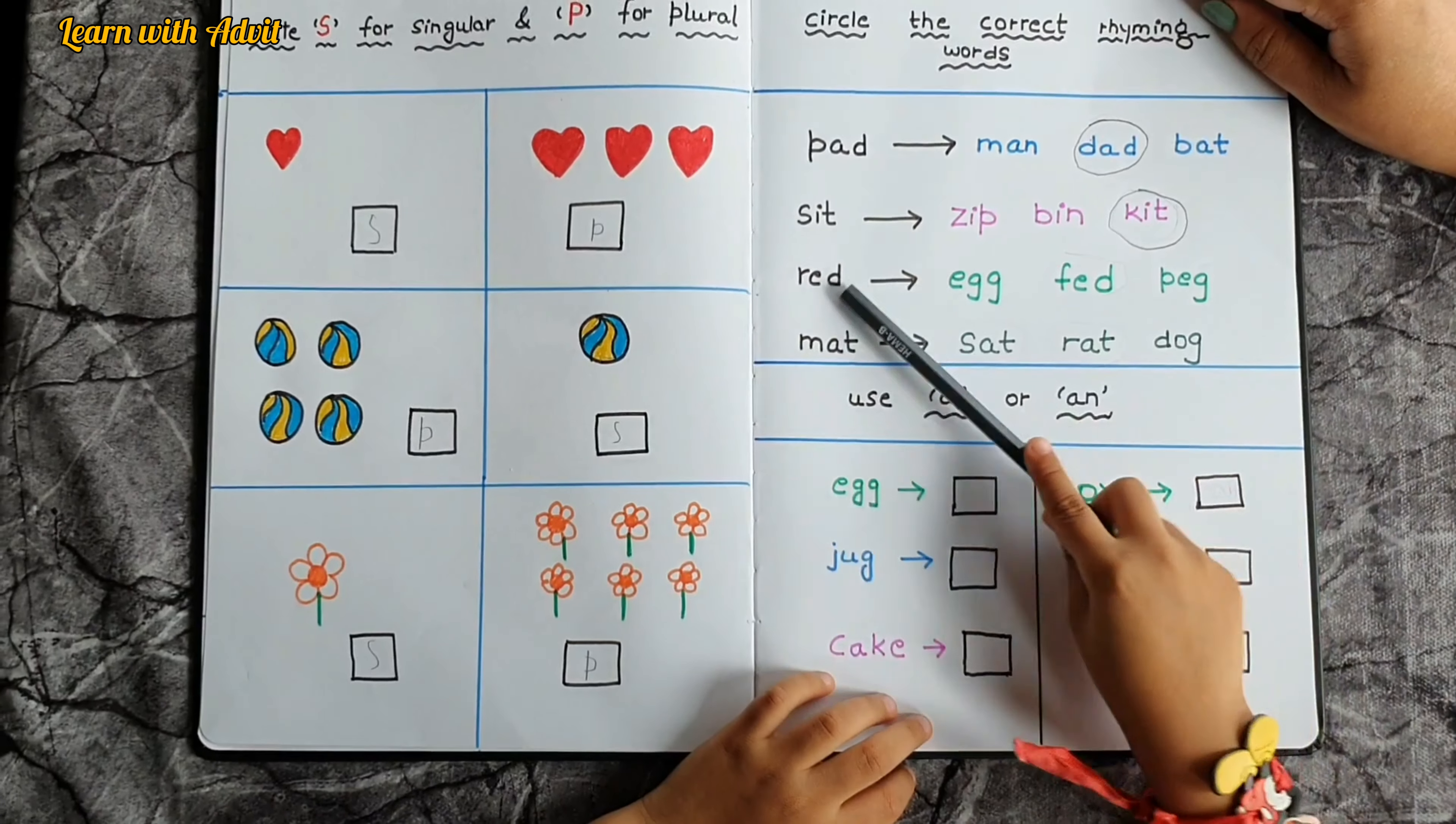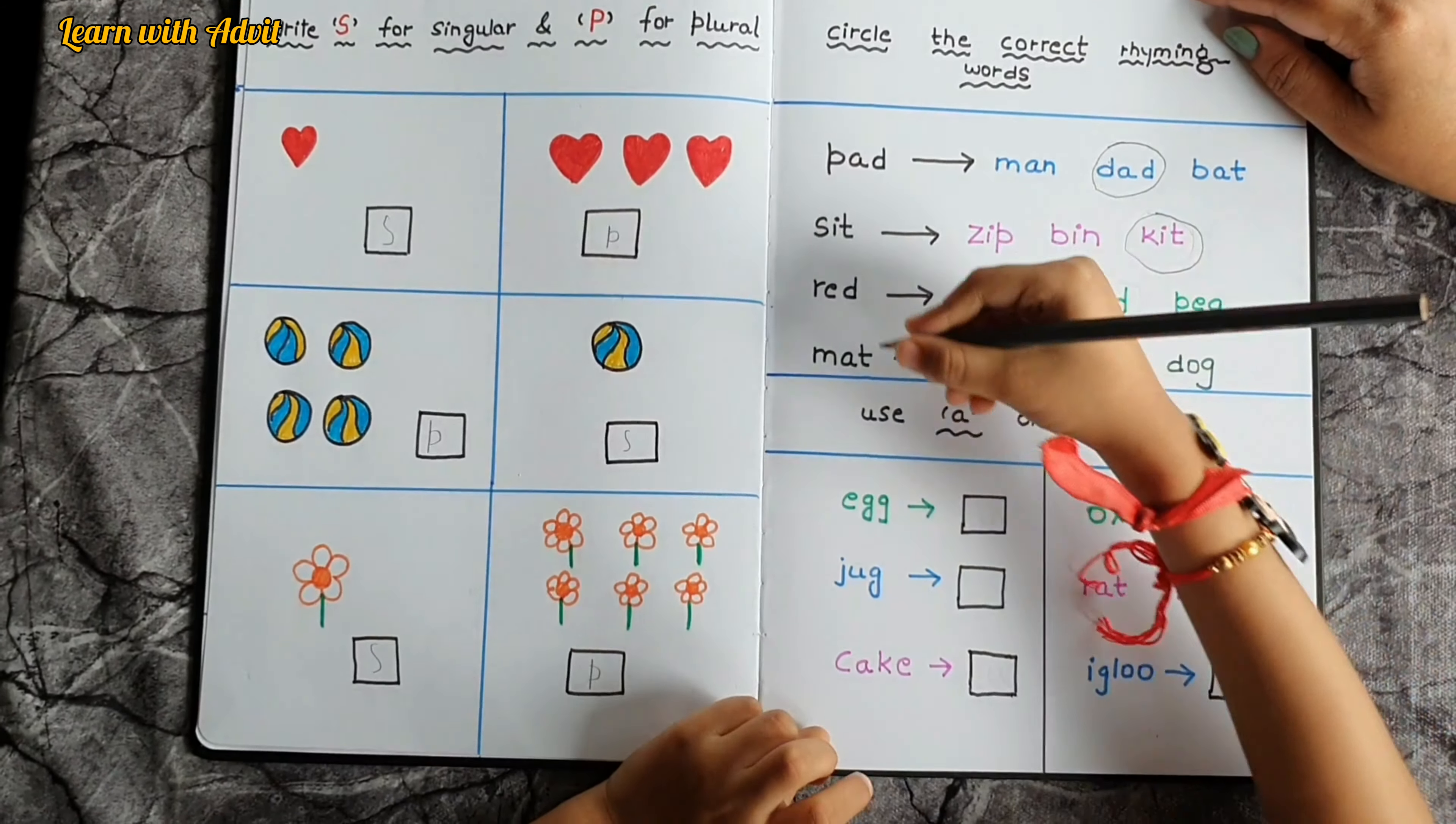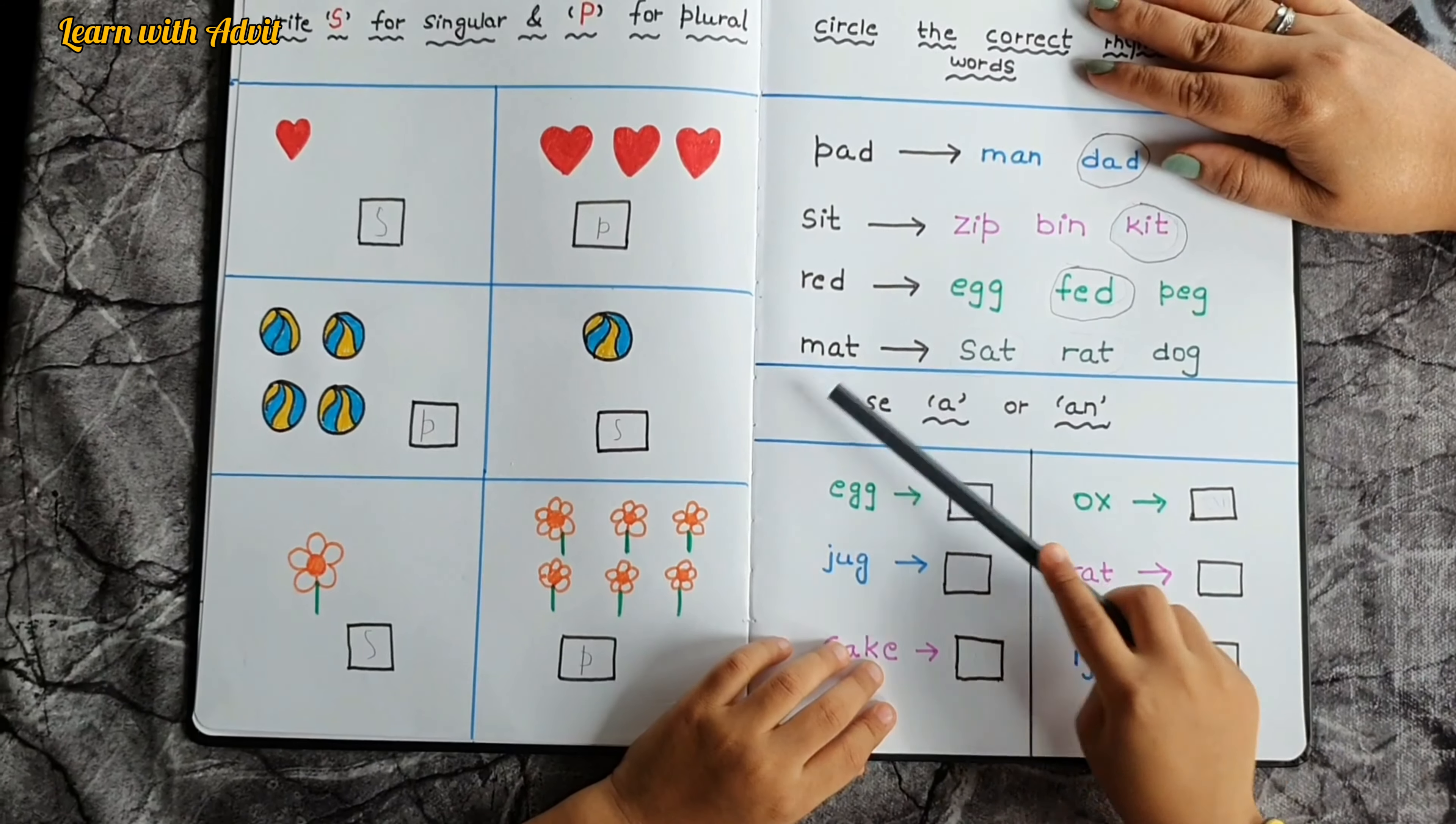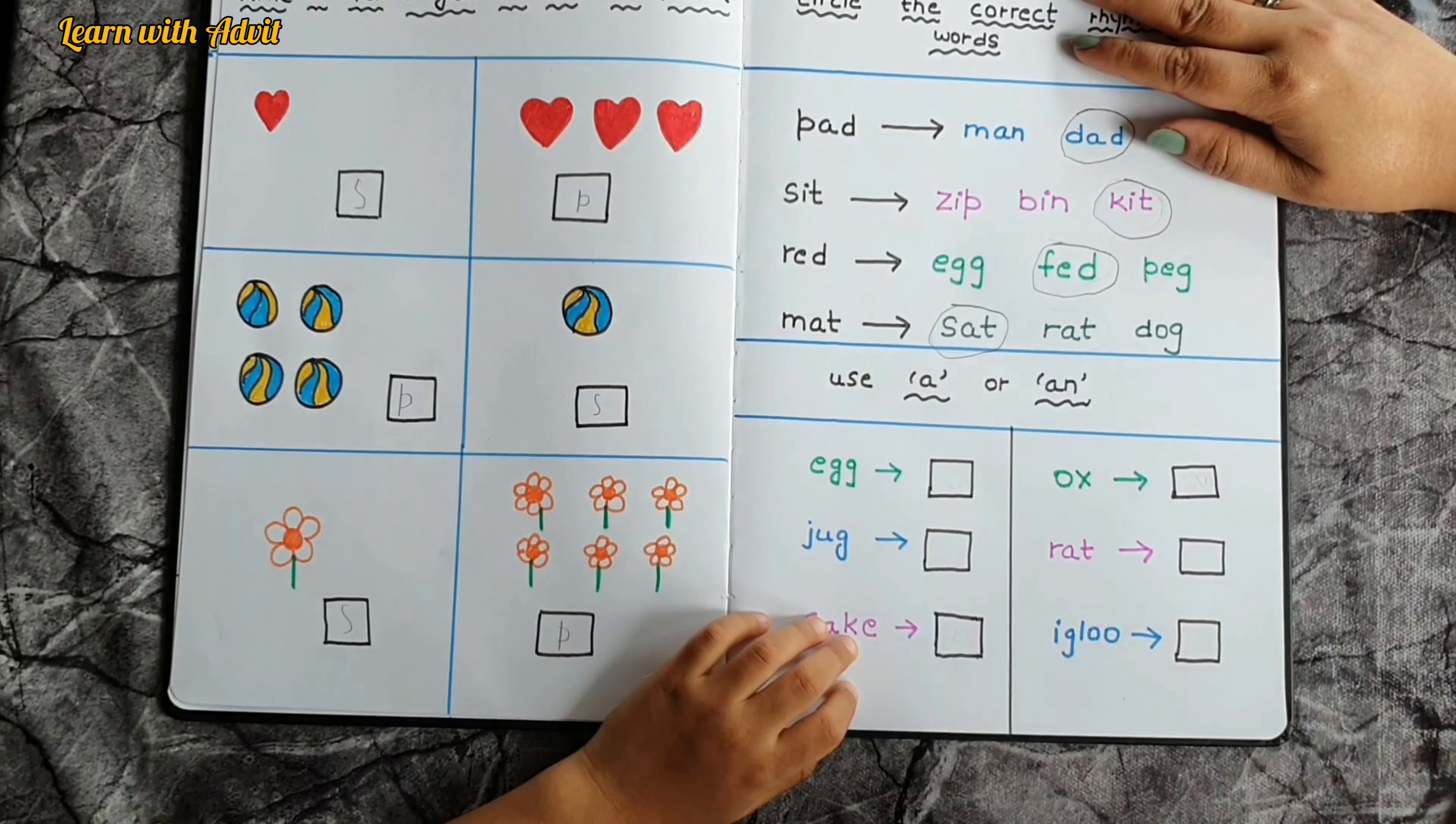Red, red and fed, fed, fed. I fed red treats to the dog. Mat and sat. And there's one more rat, yes. Sat, the rat sat on the mat, very good.